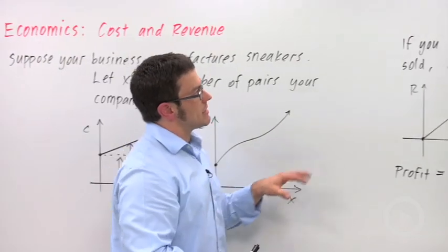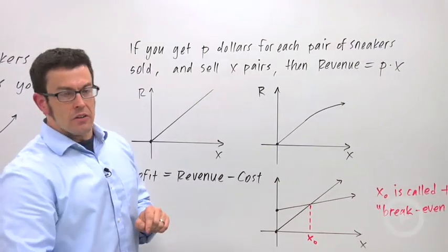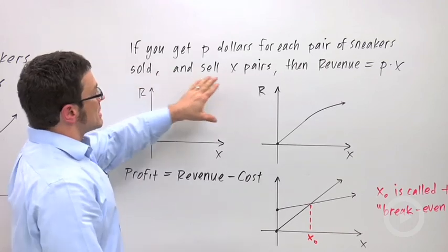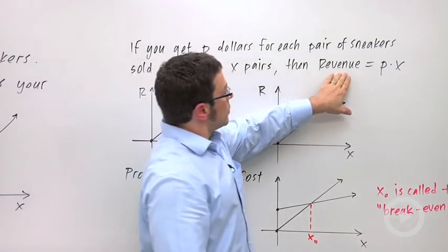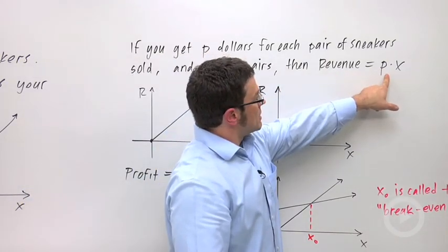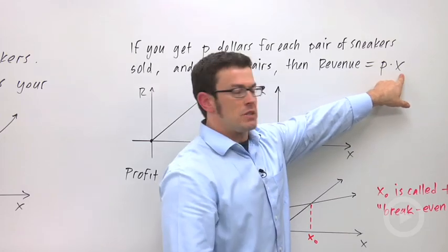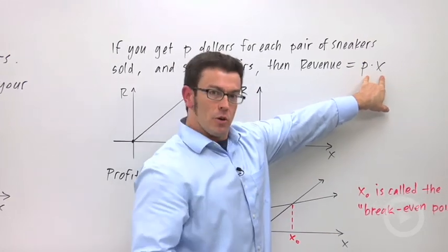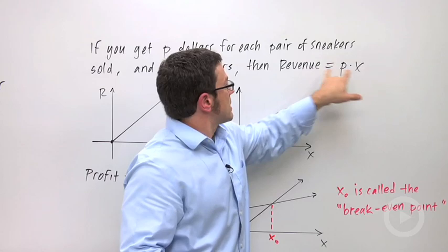Now that's cost. Let's take a look at revenue. If you get P dollars for each pair of sneakers you sell, and you sell X pairs, revenue is going to be the price of the sneakers times the number of pairs you sell. This will be the amount of money that you're bringing into your company. P times X, that's revenue.